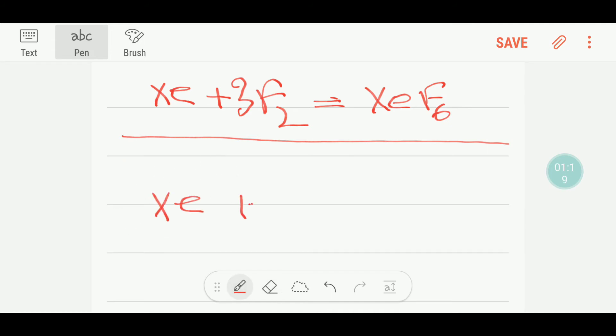Xenon plus fluorine gives us xenon hexafluoride. I can see here we have six fluorine, but here we have two. So I can put here three, three times two that gives me six. And here xenon one to one, so this is balanced.